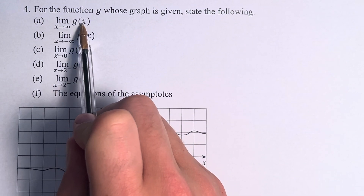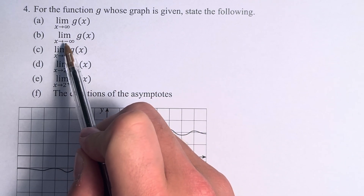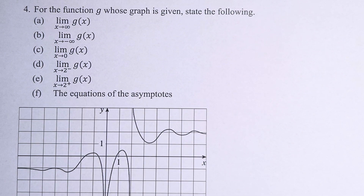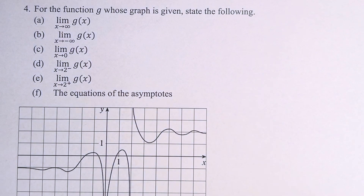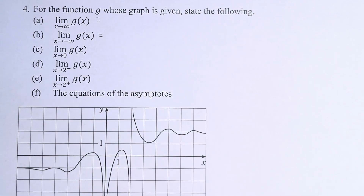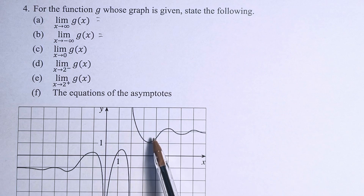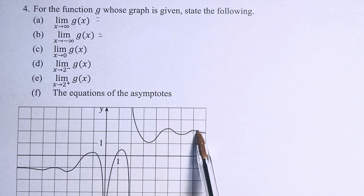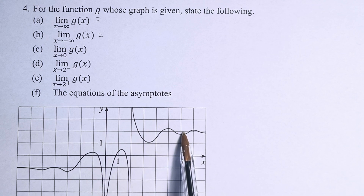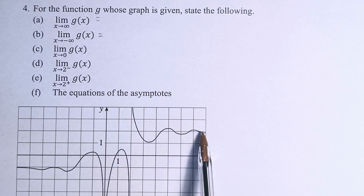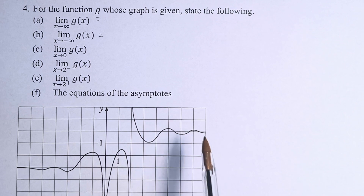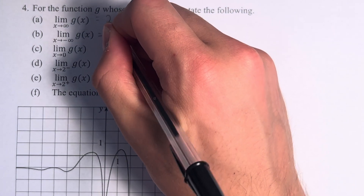We have the limit as x approaches infinity of g of x. What this means is not that we're actually seeing what happens when x equals infinity. We're saying as x increases beyond the bounds of the graph that we can see, what is the value we would expect the function to take? We can see that as x gets bigger and bigger, it's increasing and decreasing, but the function is staying around this value. Therefore, as x goes off to infinity, the value of the function stays around this point — a y value of 2 — therefore we say the limit is equal to 2.